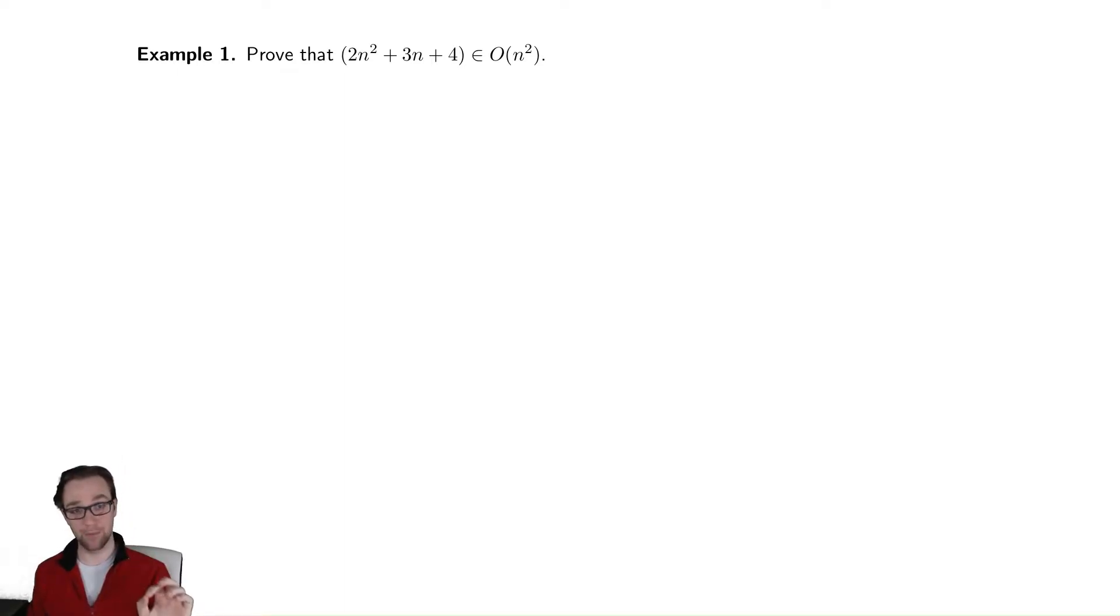So for our first example, we're going to look at showing that some parabola is in Big O of n squared. The technique I use for doing this is I start by writing down the given function, 2n² + 3n + 4. You then identify what is the highest order term. In this case, that would be n².